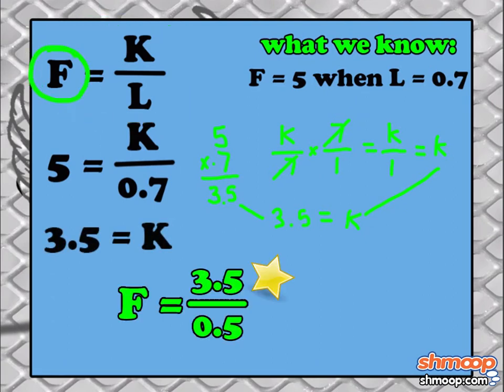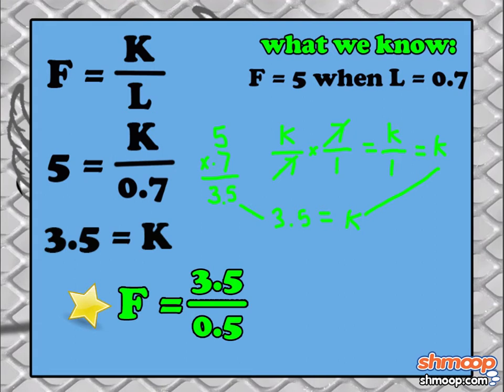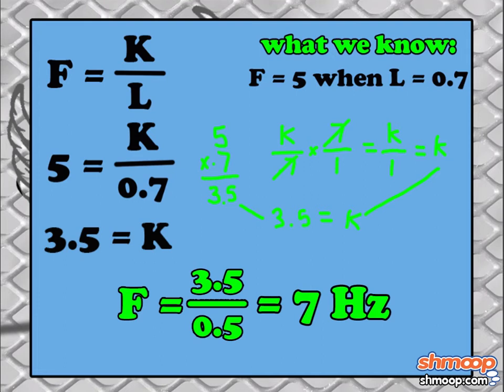Plugging this new value into our formula, we get f equals 3.5 divided by 0.5, giving us the frequency f of a 0.5 inch long chest hair. So the answer is 7 hertz.